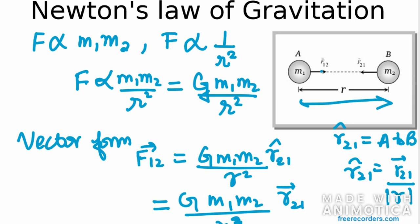And we have a negative sign here. So here negative sign indicates that the direction of F12 is opposite to that of r̂21 unit vector.